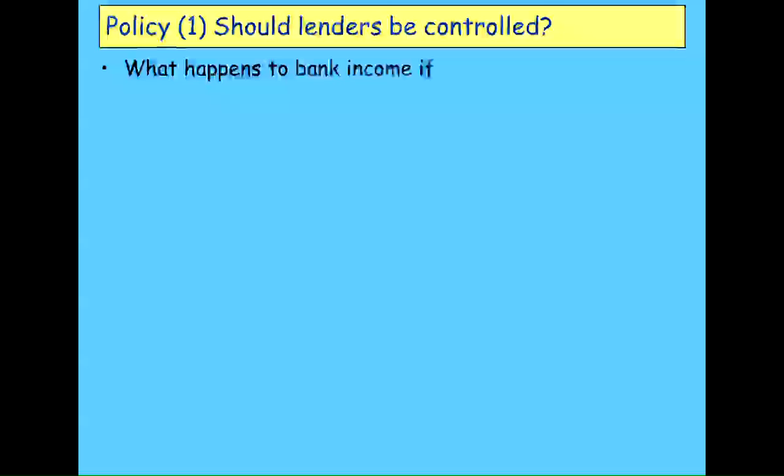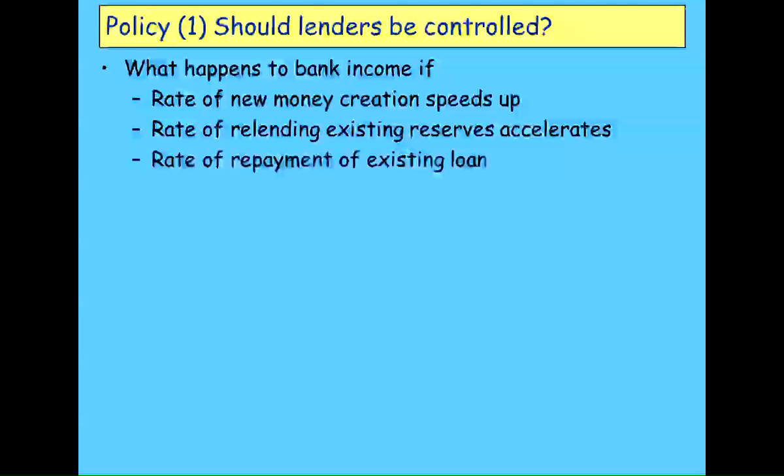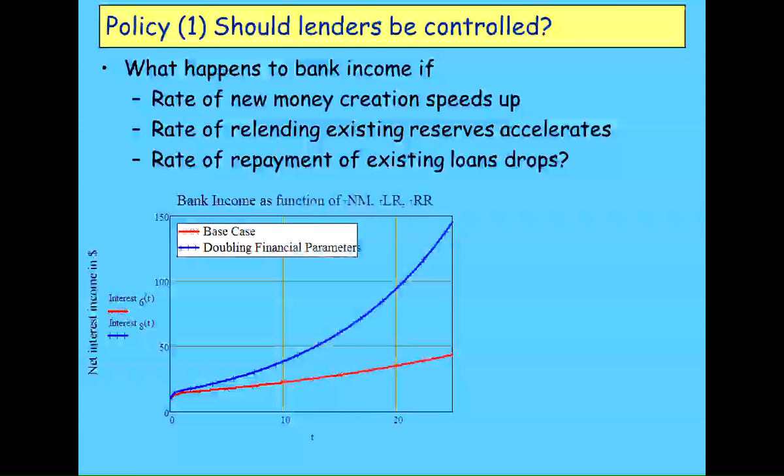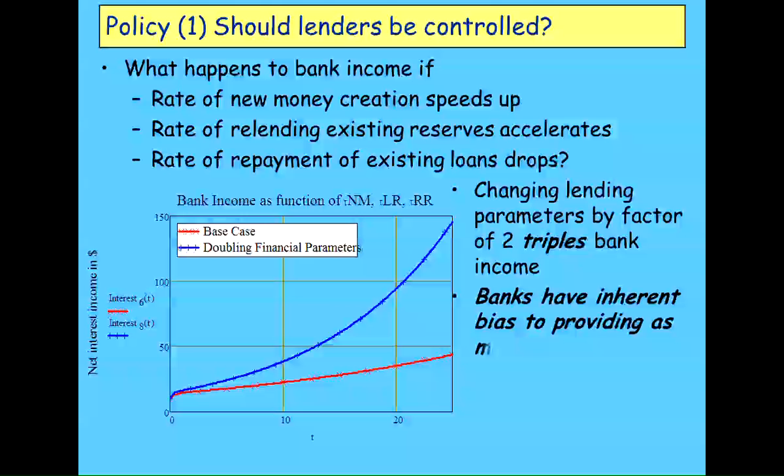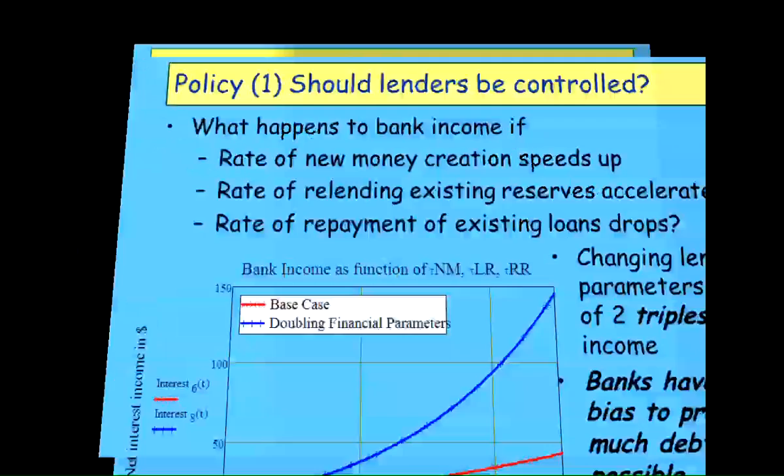Let's ask a couple of policy questions. Should you control lenders? The neoclassical agenda has been to let them rip, deregulate everything. If you let bankers decide what rate of money creation occurred, how fast they relend their existing reserves, and how quickly people repaid their debt, what would they like? They'd like a faster rate of money creation, faster rate of circulation of existing stock of money, and slower repayment of debt, because that increases their income. If you let them make the decisions, they can persuade us to take on too much debt. There's nothing productive about that increase in debt. It simply increases the load on the society, but it triples bank income. They've got an inherent bias towards providing as much debt as they can possibly persuade us to take on.